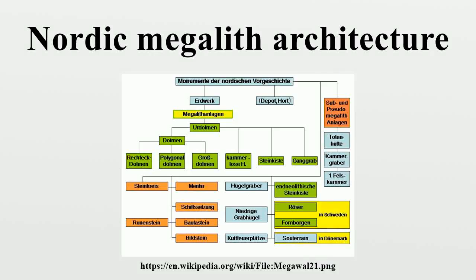Nordic megalith architecture is an ancient architectural style found in Northern Europe, especially Scandinavia and North Germany, that involves large slabs of stone arranged to form a structure. It emerged in Northern Europe predominantly between 3500 and 2800 BC.